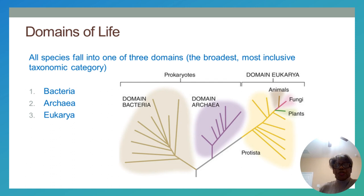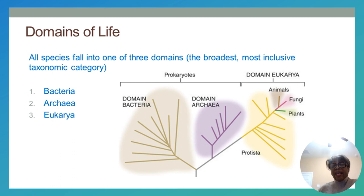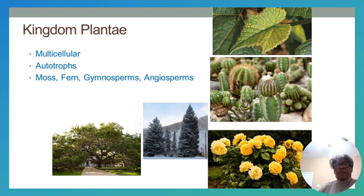Earlier in the semester we also discussed the domains of life — three domains: bacteria, archaea, and eukarya. Bacteria and archaea are prokaryotes, meaning they do not have a true nucleus. The domain eukarya generally includes multicellular organisms, though some are unicellular. Animals, fungi, plants, and protista fall under eukarya — eukaryotes that possess true nuclei. We also touched on taxonomy and how organisms are named using kingdom, phylum, etc. Today's lecture focuses on the plant kingdom, or Kingdom Plantae.